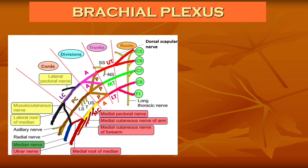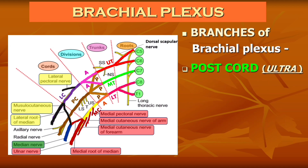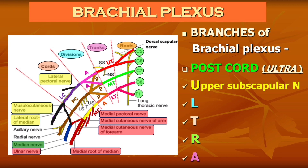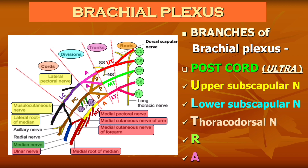Now we will move to the branches from the posterior cord and the mnemonic to remember them is ULTRA. U for upper subscapular nerve, L for lower subscapular nerve, T for thoracodorsal nerve which is also called the nerve to latissimus dorsi, R for radial nerve which is the largest branch of the brachial plexus, and A for axillary nerve. So these are the branches from the posterior cord of the brachial plexus.